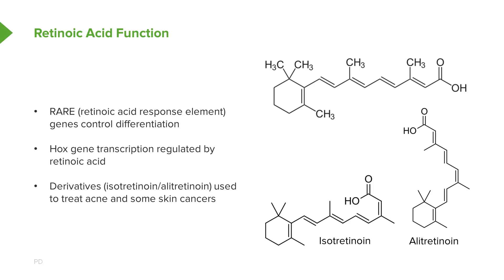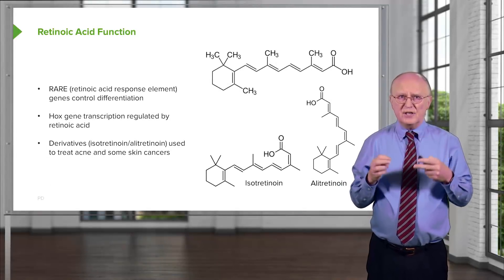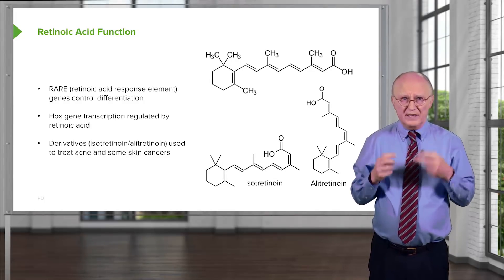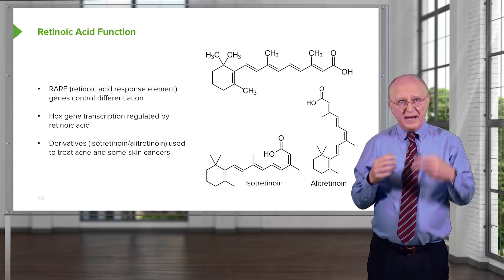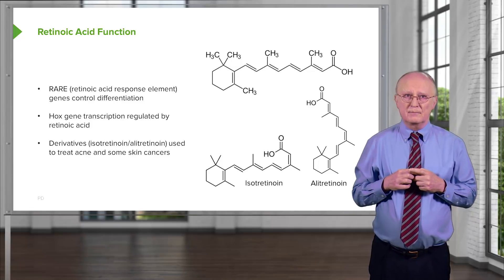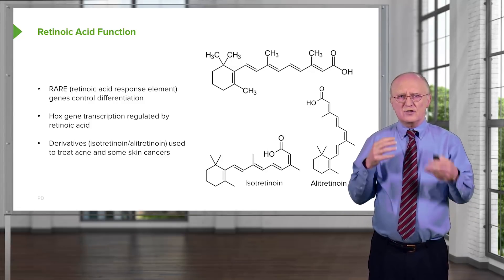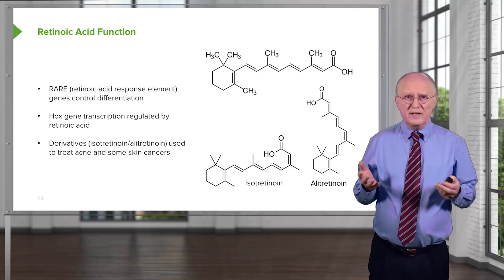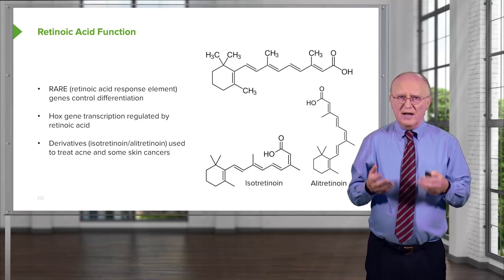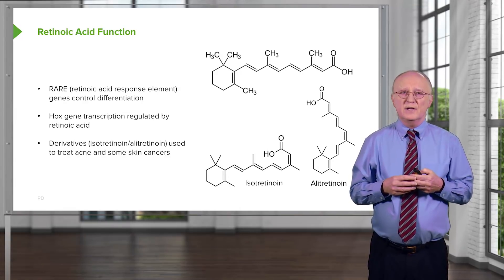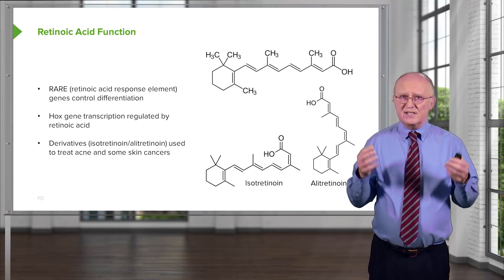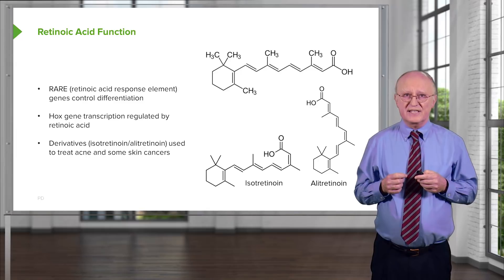RARE sequences — the retinoic acid response element — are sequences located upstream of genes that control differentiation, including Hox genes. These are regulated by retinoic acid acting through RAR binding to these RARE sequences. Because retinoic acid is so strongly teratogenic and promotes differentiation, that's one way to treat cancer. Derivatives of vitamin A such as isotretinoin and all-tretinoin are used to treat cancer and in some cases to treat acne, because they have strong effects on the skin.